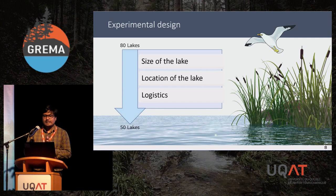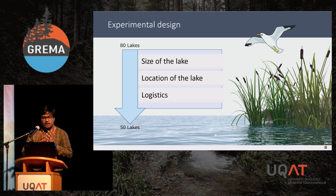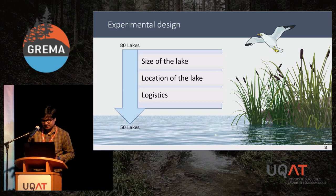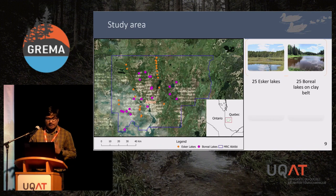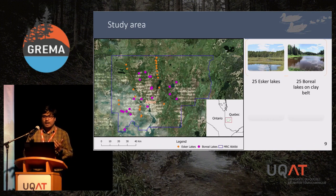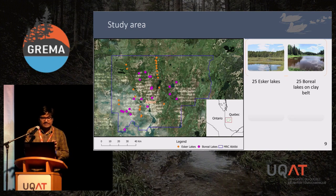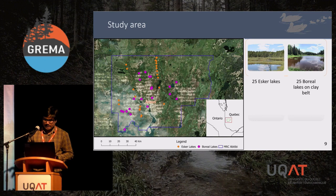The objective of our first article is to evaluate waterbird, fish, and macroinvertebrate biodiversity in ESCR lakes and also to identify environmental drivers, using the food web approach. There are 80 lakes selected around the territory of MRC-ABTB. Among those 80 lakes, depending on size, location, and logistics, we selected 50 lakes. Among these 50 lakes, 25 were situated in ESCRs and 25 were situated on the clay belt.